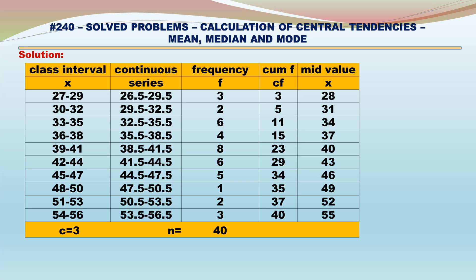Let us calculate mid-values for each class interval. 26.5–29.5: mid-value 28. 29.5–32.5: mid-value 31. 32.5–35.5: mid-value 34. 35.5–38.5: mid-value 37. 38.5–41.5: mid-value 40. 41.5–44.5: mid-value 43. 44.5–47.5: mid-value 46. 47.5–50.5: mid-value 49. 50.5–53.5: mid-value 52. 53.5–56.5: mid-value 55.